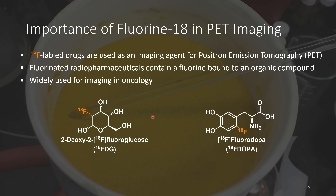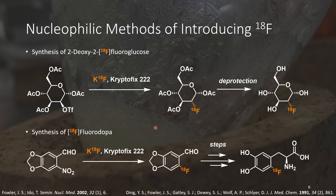Another place where fluorinated molecules play an important role is as radio tracers for PET imaging. PET imaging is used to visualize diseases such as cancer, and may also be used to study metabolic conditions.